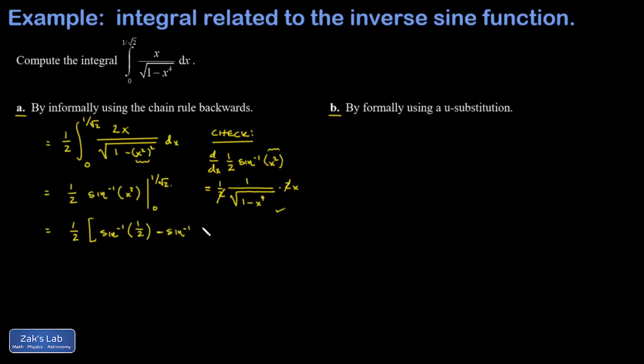Then I subtract the angle whose sine is 0, which is 0 of course. So I have 1 half, the angle whose sine is 1 half. That's pi over 6. And I end up with pi over 12 as the final answer.